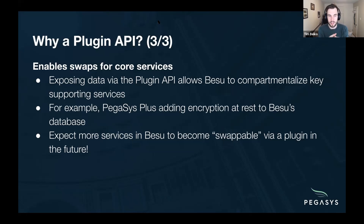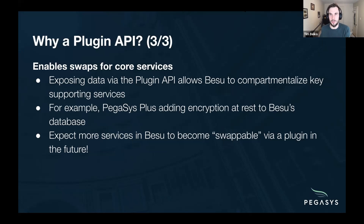One example is the encryption at REST that we added to Besu as part of PegaSys+. We had some customers who had that as a specific use case. The reason it's not a default on all of Besu is it affects performance, so unless you have a strong use case for encryption you probably don't want to take that performance hit. The second reason you'd want services to be swappable is if you already have a very large existing technology stack and don't want to add a new service — so you can swap in Besu for a service you already use and not add a new dependency.